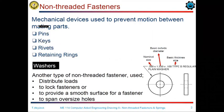Washers are the machine elements used with bolts and nuts. Washers are used to distribute the pressure as a result of the tightening force. The deformation of a washer during tightening increases the friction force.